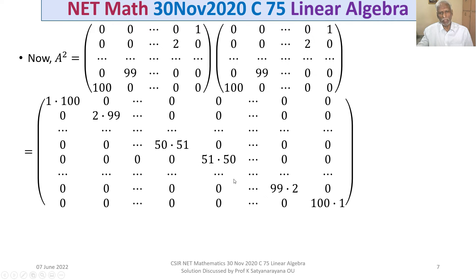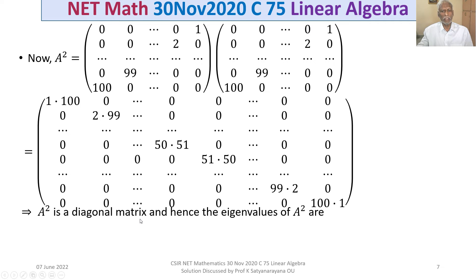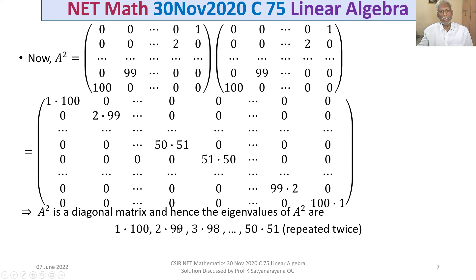Since A² is a diagonal matrix, its eigenvalues are simply the diagonal entries: 1×100, 2×99, 3×98, ..., 50×51. Then 51×50, ..., 99×2, 100×1 are also present. These are repeated twice, so we have 50 distinct eigenvalues each with multiplicity 2.